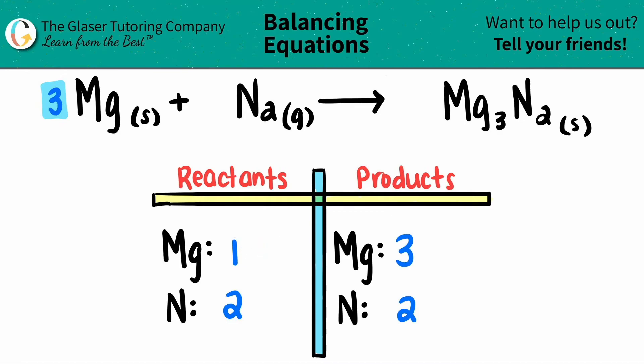So now I will have three magnesiums, and I don't have to distribute this three to anything because it's just magnesium, and if I'm looking here, that's all I have to do. Both sides, we have three magnesium, and both sides, we have two nitrogens, so I've balanced this equation. I have three magnesiums plus one N2, and that will produce only one magnesium nitride, Mg3N2.